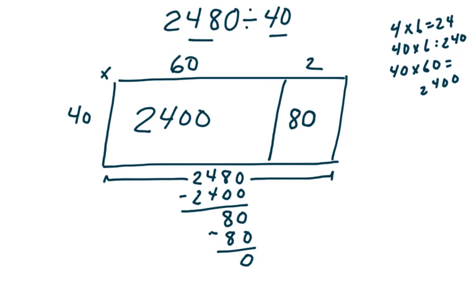When we're at zero, we know we're done. We just add the partial quotients. 60 plus 2 gives us 62.